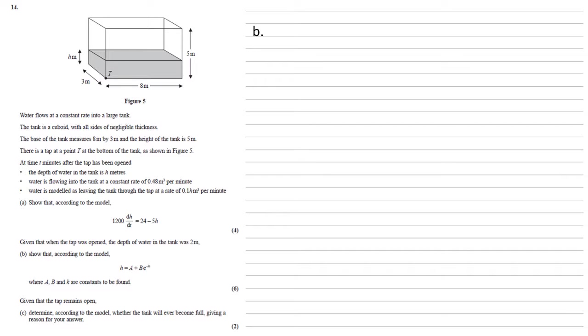So, our model, 1,200 dh by dt is equal to 24 minus 5h. We need to get from dh by dt to h. So we're going to do some integration with respect to t. But, in order to do that, we need to get all the h's onto the left-hand side with the dh by dt. So this means we're going to divide by the 24 minus 5h. This gives us 1,200 times 24 minus 5h to the minus 1, dh by dt is equal to 1. We can now integrate the entire thing with respect to t.